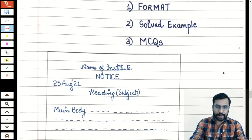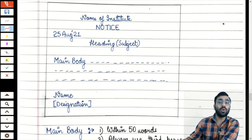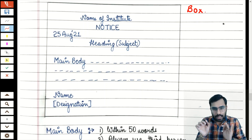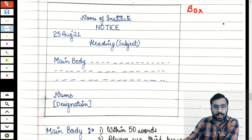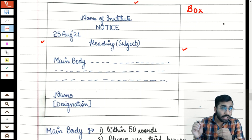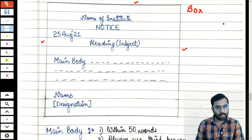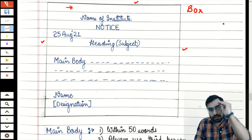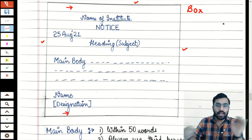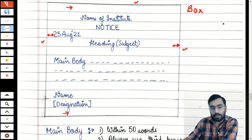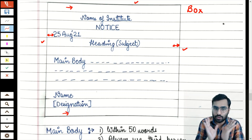Starting with the format: first, for notice writing, you will always make a box. Always remember — when you make a notice, you will always draw a box around it.